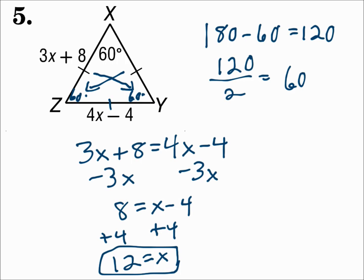Since two sides were the same, those opposite angles were the same. We already had 60 degrees, so the two remaining angles added up to 120 and were each 60 — giving all angles the same, which means all sides are the same. Remember: in a triangle, if any sides are congruent their opposite angles are congruent, and if any angles are congruent their opposite sides are congruent. The three angles add up to 180, so you can use that to find angle measures and set equal side measures to solve.